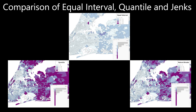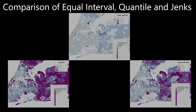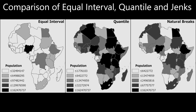Each map is based on the same underlying data, but looks significantly different based on the data classification method used to make each map. Keep this in mind as you start using GIS software tools to make thematic maps, and be very careful and critical of the particular method that you are using. Here's another series of maps that compare the three methods so you can also see how the same underlying dataset will look different depending on the classification technique that is used.